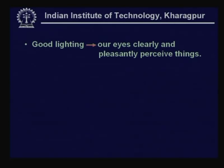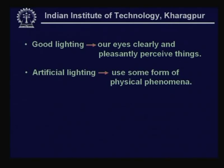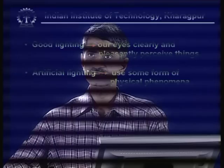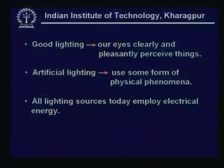Good lighting is necessary so that we can perceive things very clearly and pleasantly, because through eyes we get most of our information. Artificial lighting has enabled us to have our activities extended around the clock, which were earlier restricted only from dawn to dusk. This uses some kind of physical phenomena, and all these sources employ electrical energy - that's one reason why half the course has been devoted to electric utility services, which will begin in the next lesson.